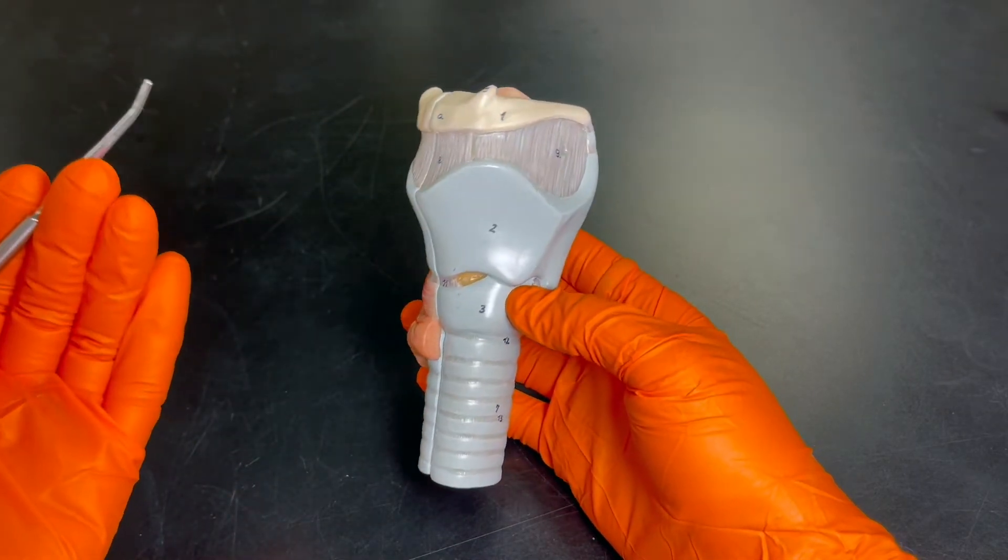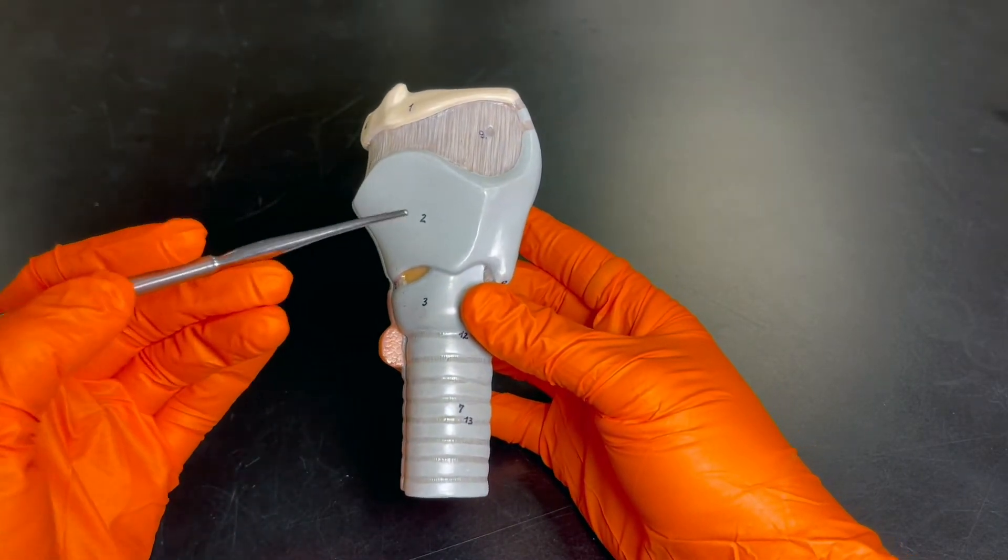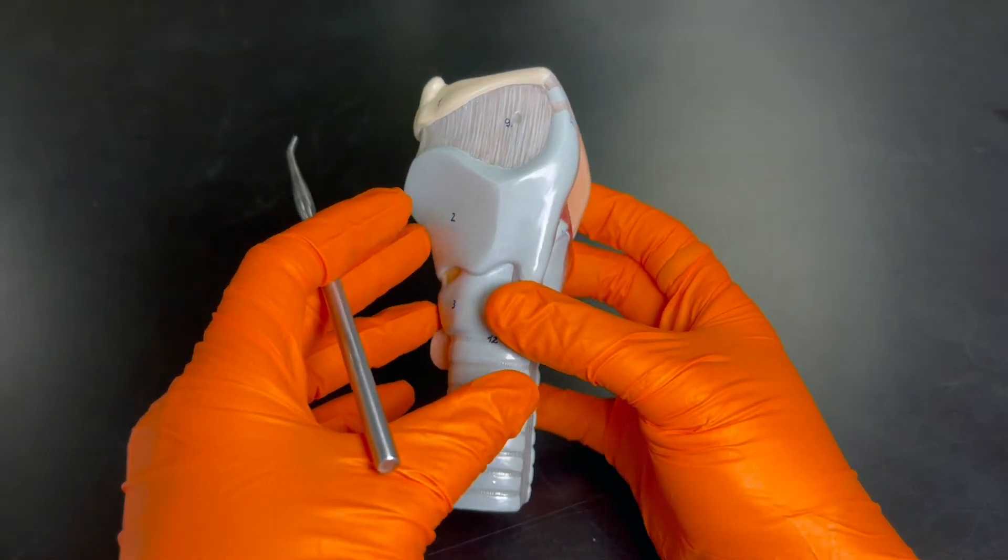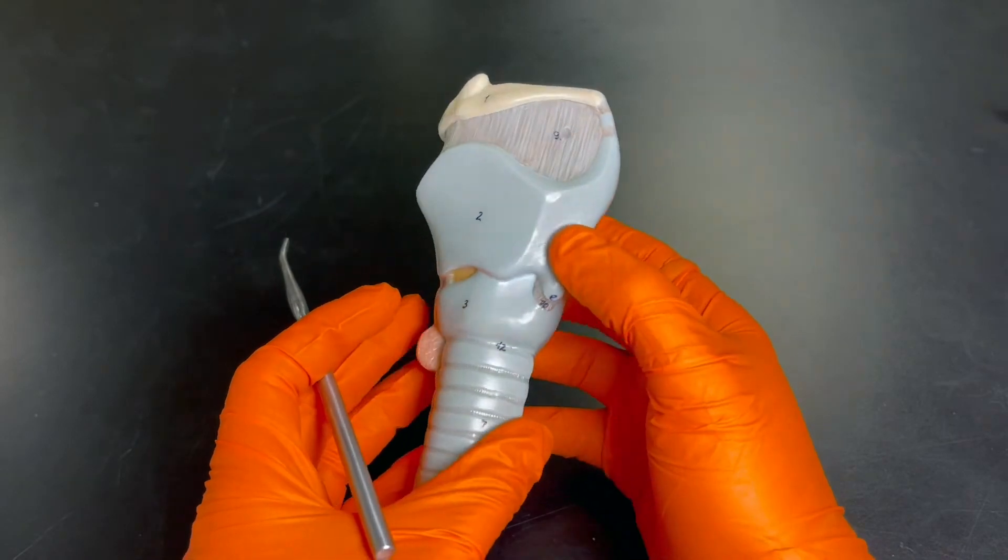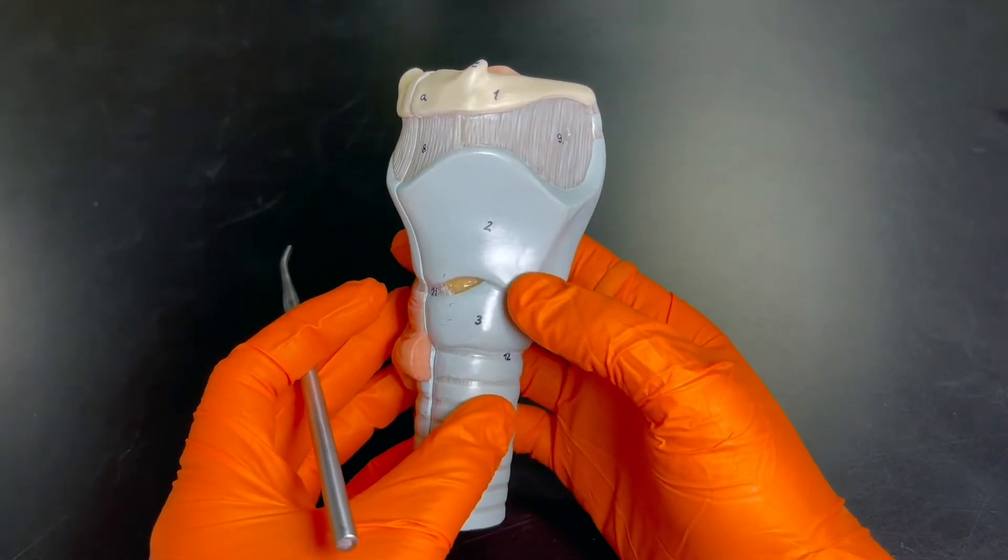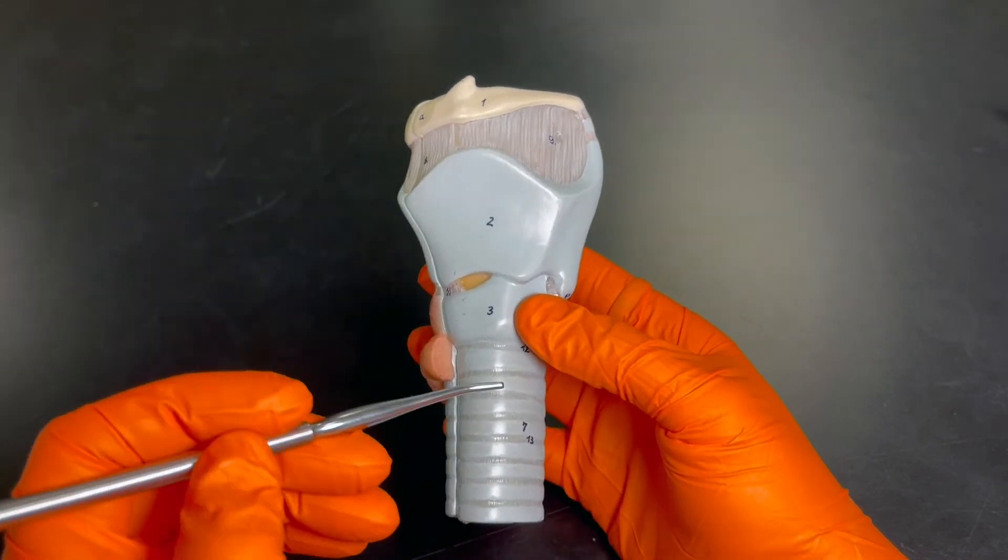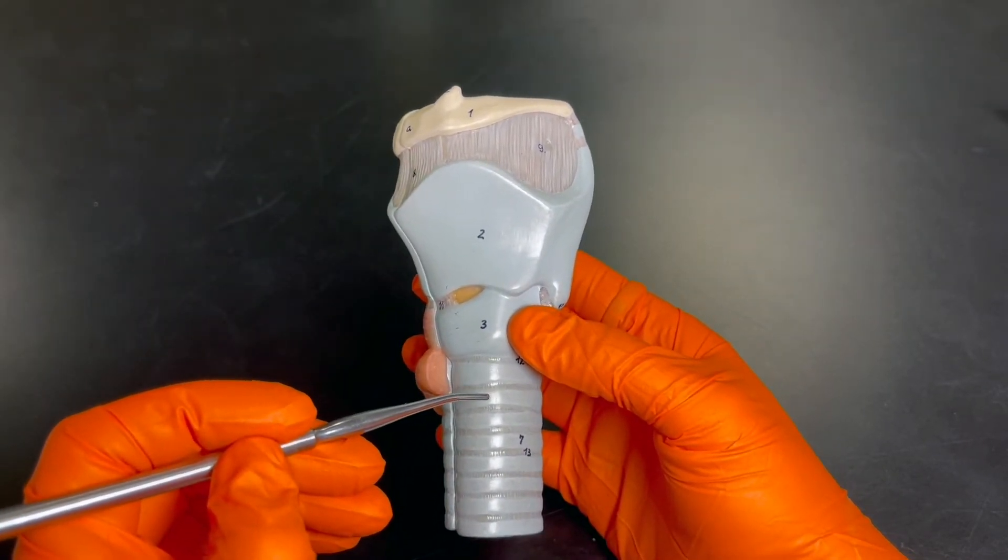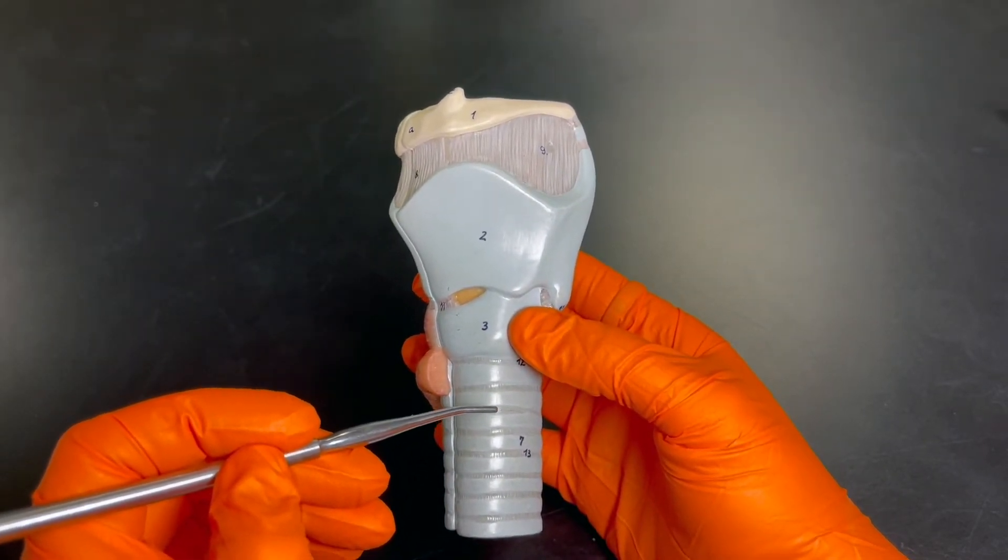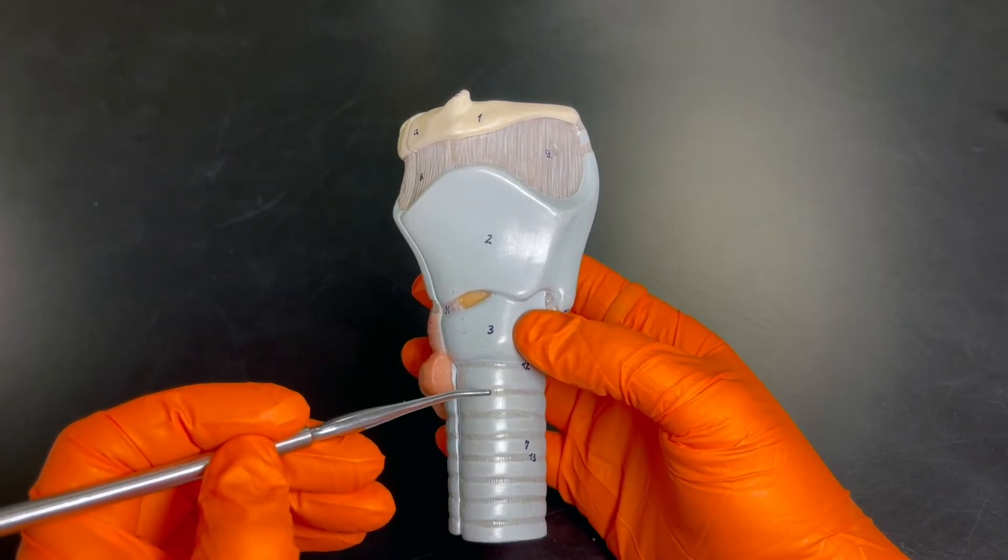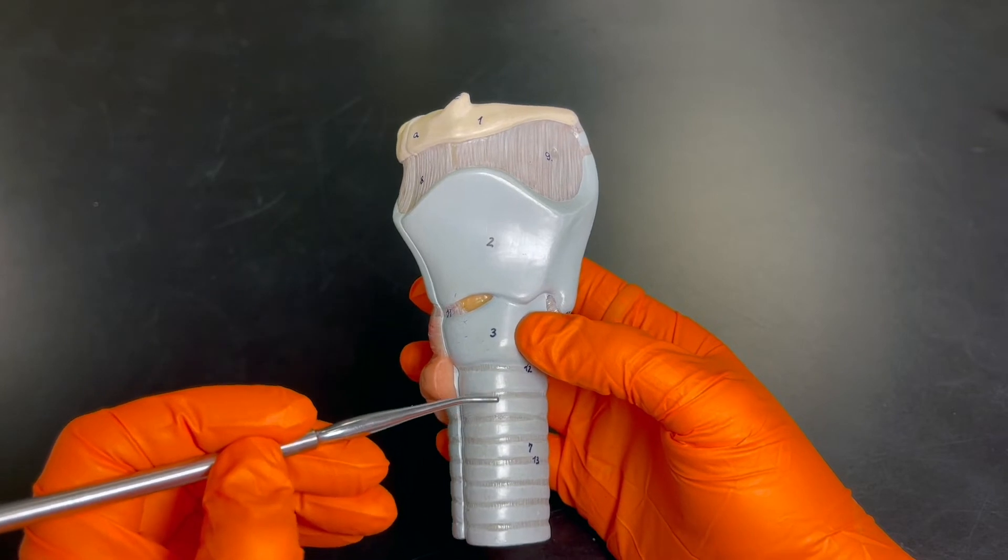Whenever you're looking at models or images in a textbook, many resources will use this light blue color to indicate cartilage, so that might help you there. In between each ring is going to be basically a little piece of tissue - it's elastic connective tissue. They kind of form little sheets and those are called annular ligaments, and so those will kind of go from here to here.